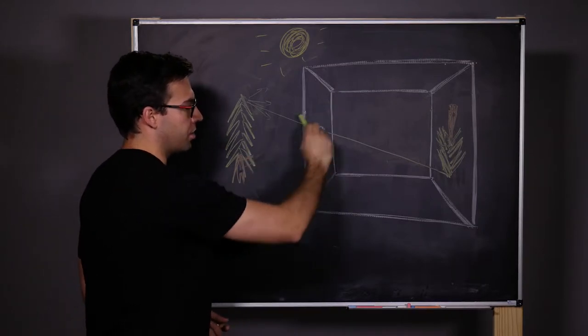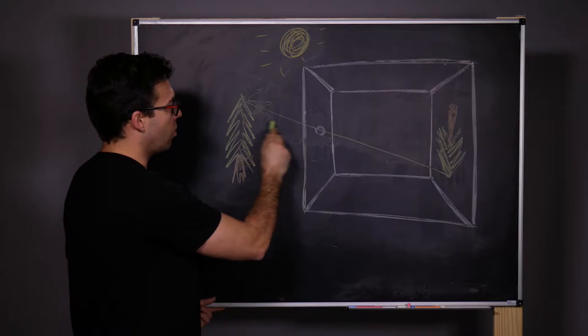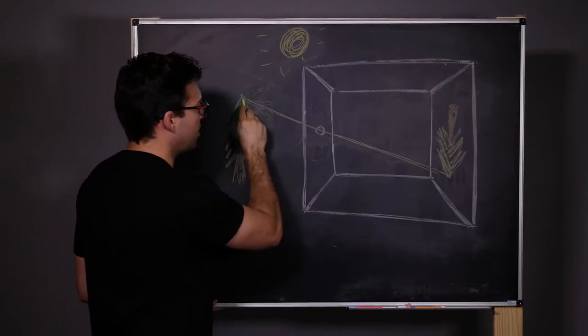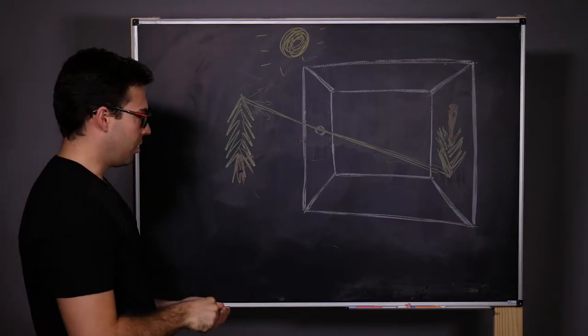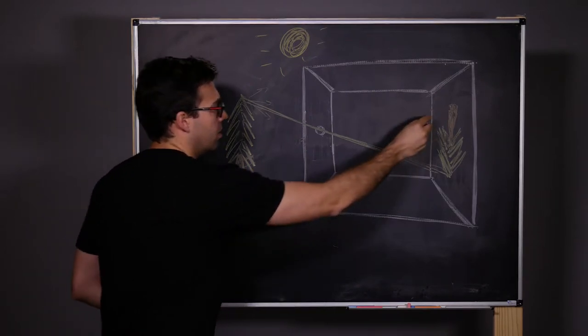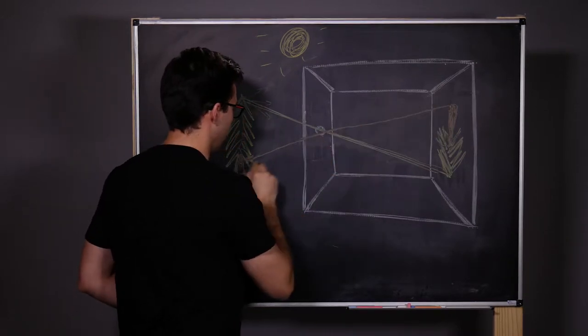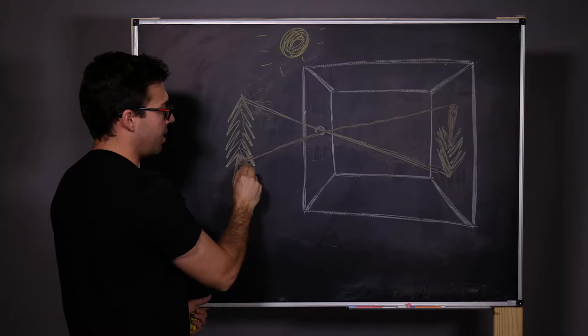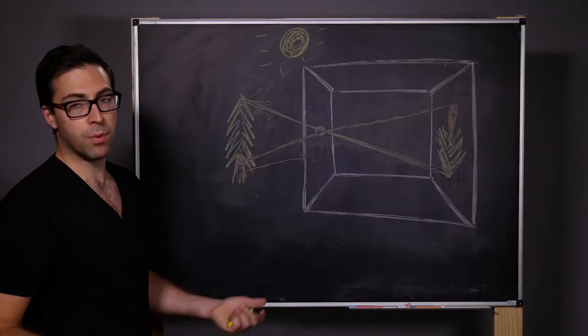Before, it was heading in all directions through the window, and it was just filling the room with light. But here, because the hole is small, only the light that comes from these points traveling in this direction will actually make it through that hole. The same goes for the base of the tree here. It can only go in this direction. The light that comes from the base that's hitting the wall doesn't go through because it doesn't have anywhere to go.